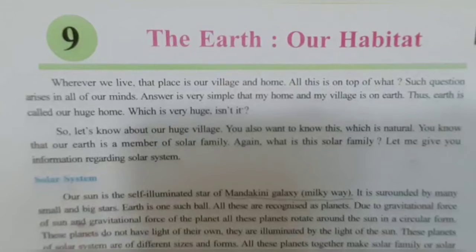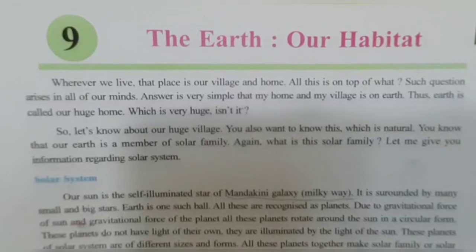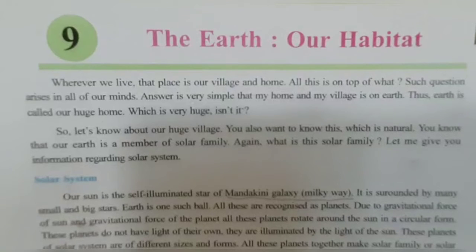Question number 27: How many seasons are there on the earth and which are they? There are two seasons on the earth — summer and winter. Question number 28: What is Dakshinayan? From June 22nd, the direct rays of the Sun shift from the Tropic of Cancer towards the south of the equator. This is called Dakshinayan.